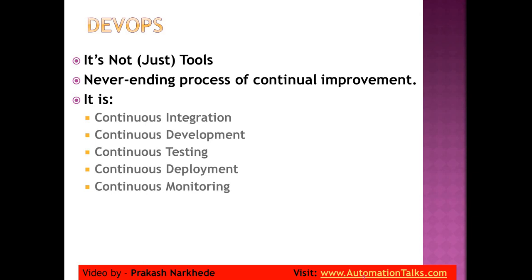Though we are not going deep into the full DevOps definition, I wanted to show you what DevOps is. As automation testers, we will focus on the first three areas: continuous integration, continuous development, and continuous testing. We won't go into continuous deployment or continuous monitoring as part of this course.